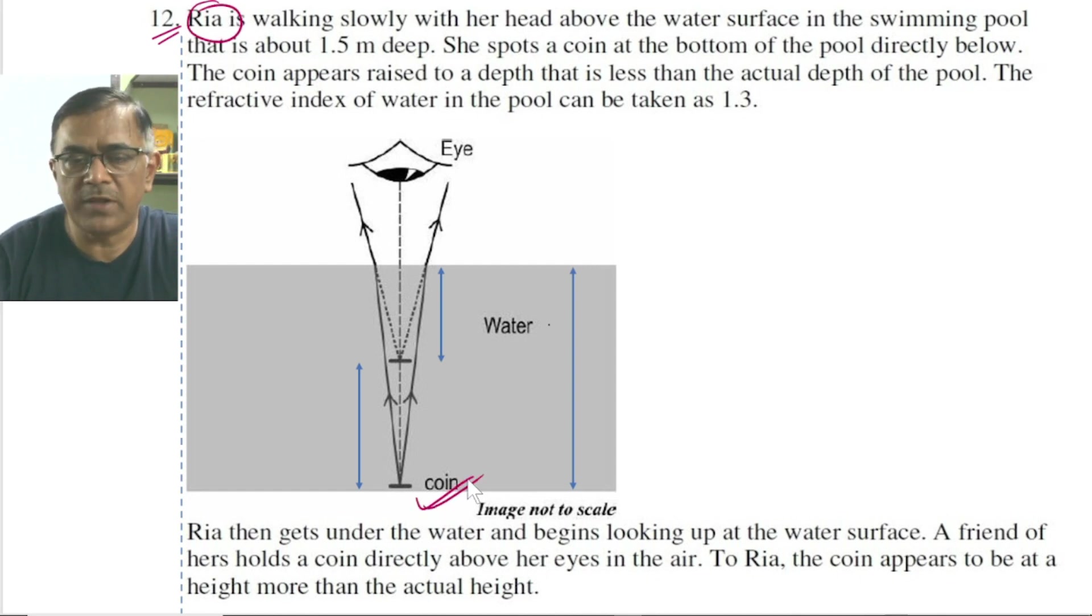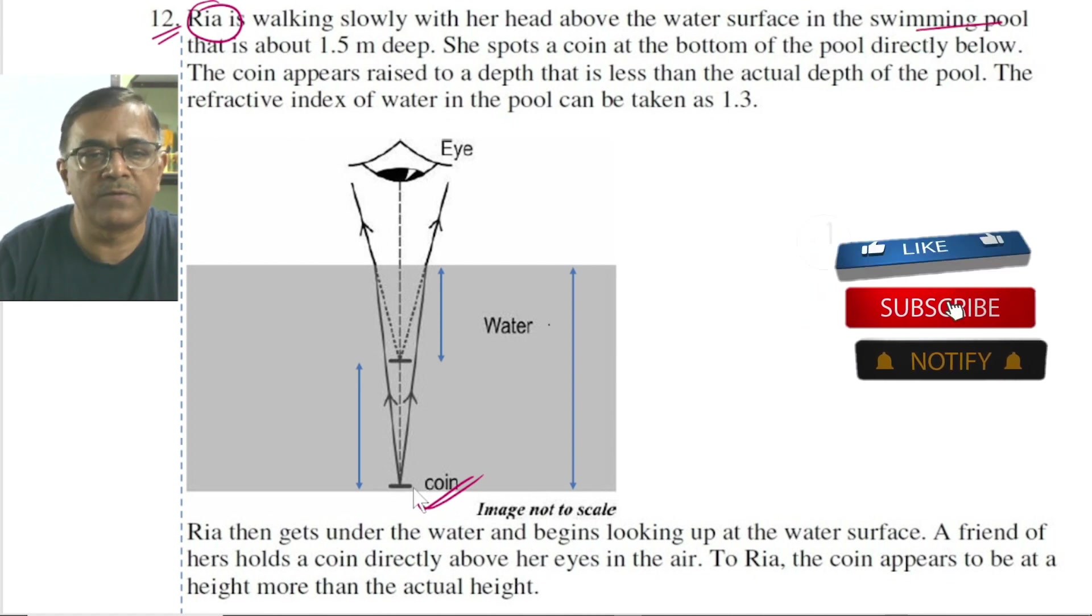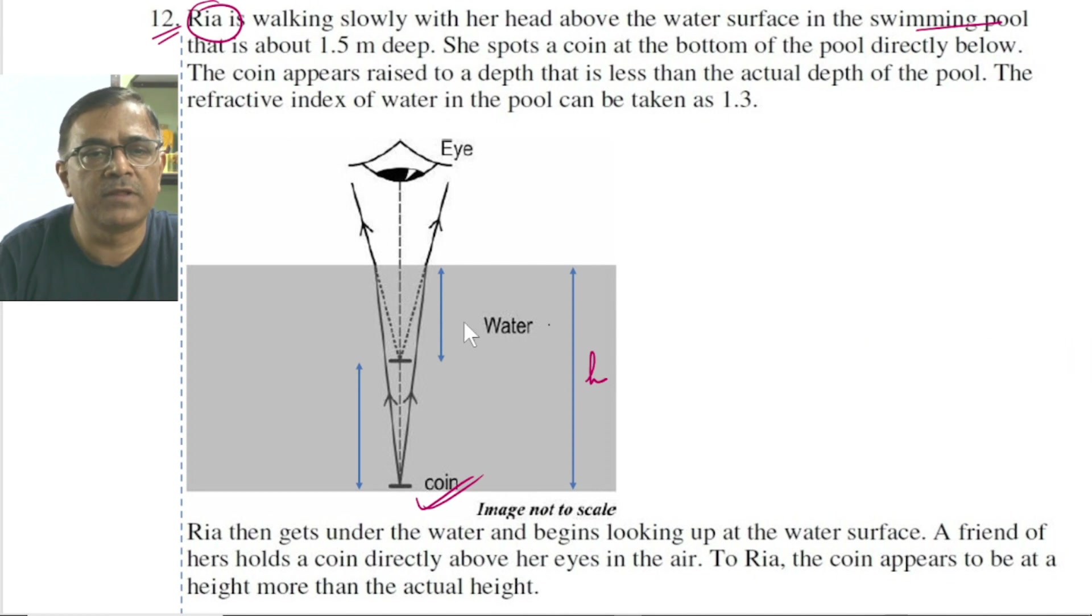Rhea looks at the coin normally which lies at the bottom of his swimming pool. The real depth of the coin is h. The apparent depth of the coin happens to be h', and this s happens to be the shift produced. If you want, you can write this point to be an object and this as the image. Mu is the refractive index of the liquid.